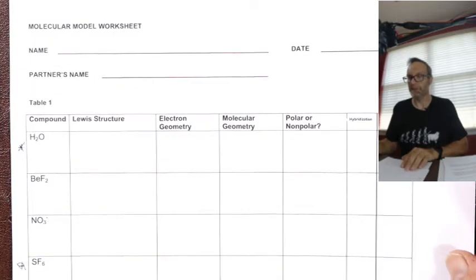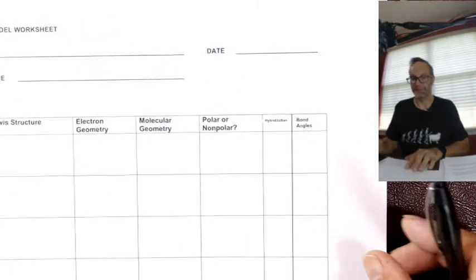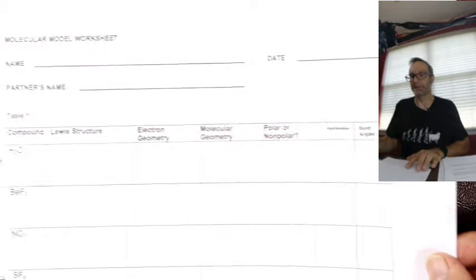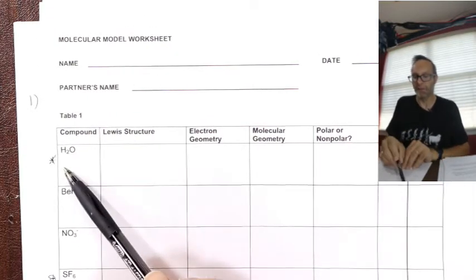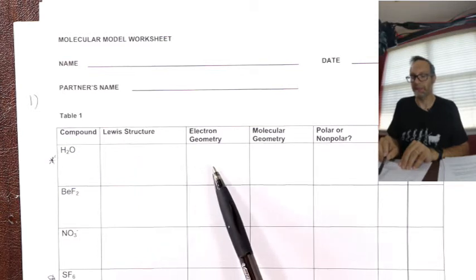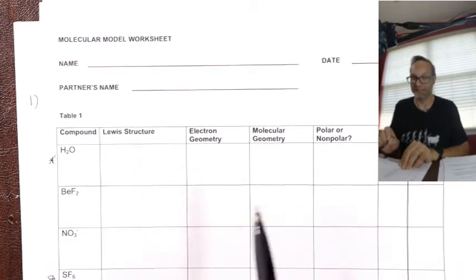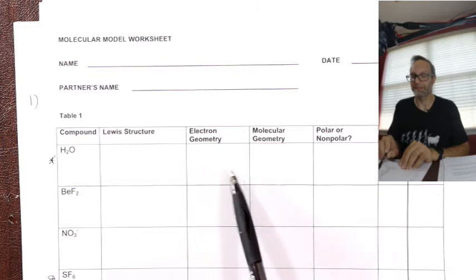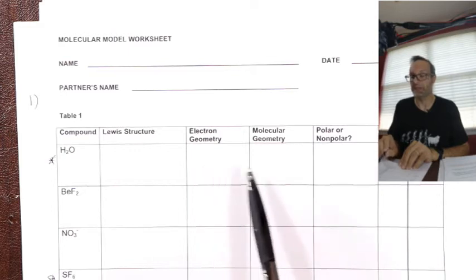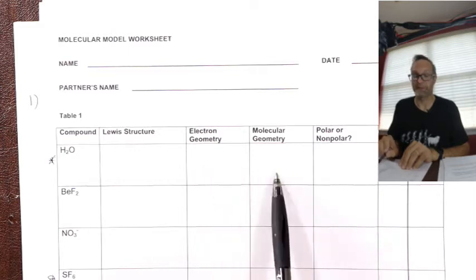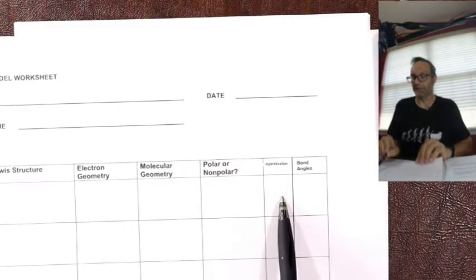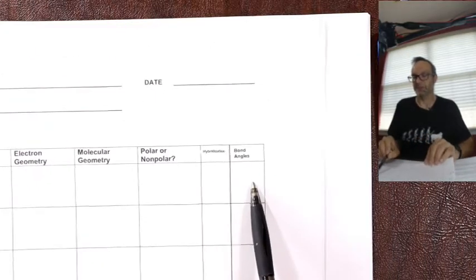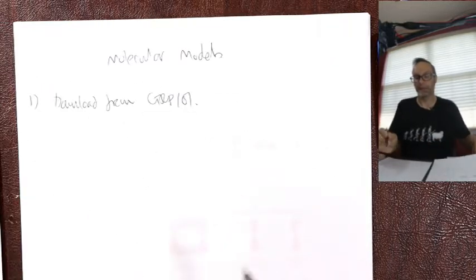So what you're going to do is - I'll slide it around - you're given certain compounds, you do the Lewis, and then based on the last couple of packets, you can figure out the electron shape and the true atomic or molecular shape. You can say if it's polar or not, look at its hybridization, and because you know the hybridization, you can get the bond angles.